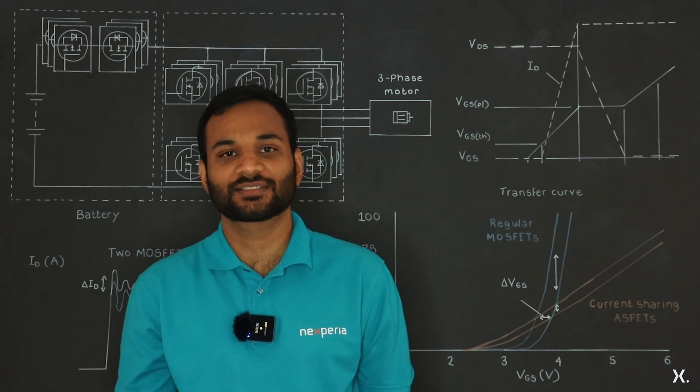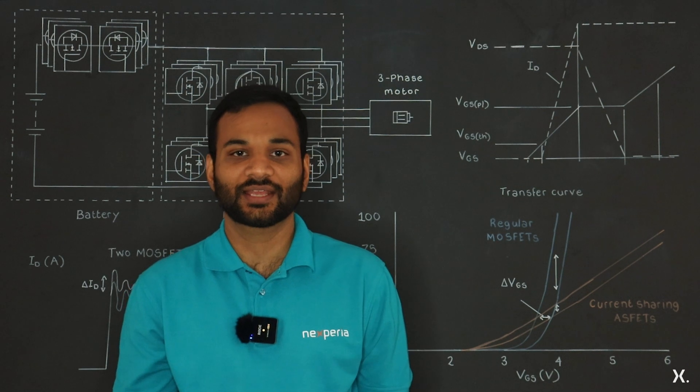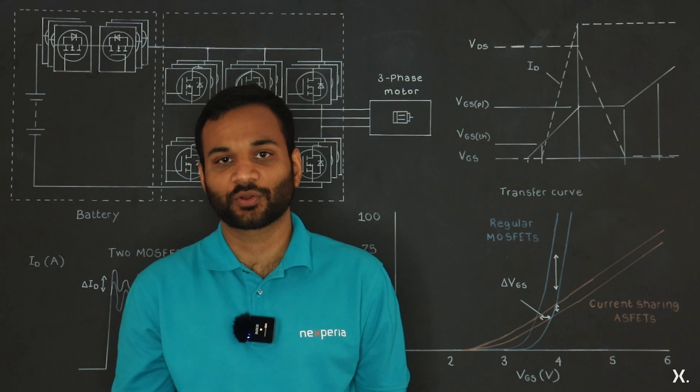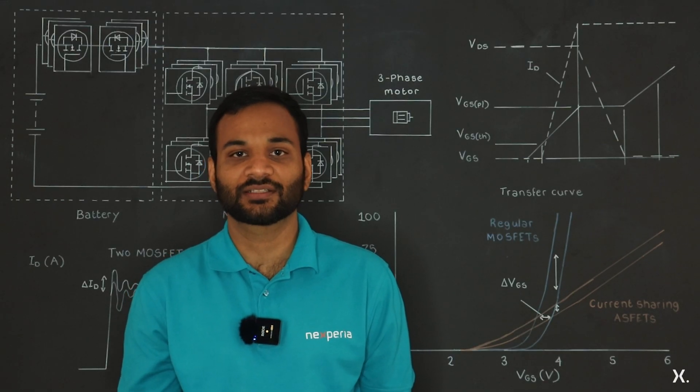Another important parameter is thermal stability. The ZTC point is where the 25 and the 175 degree Celsius transfer curves intersect. Above this point, as temperature increases, the current decreases, thus preventing thermal runaway.